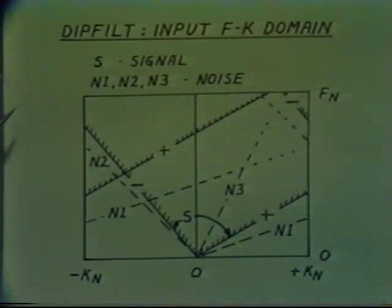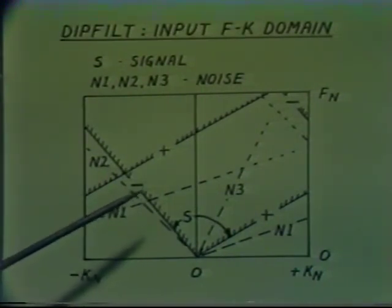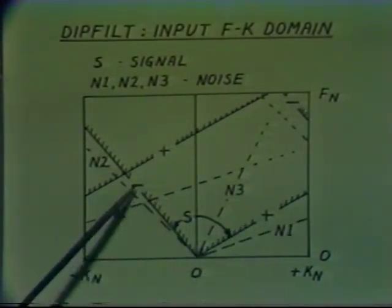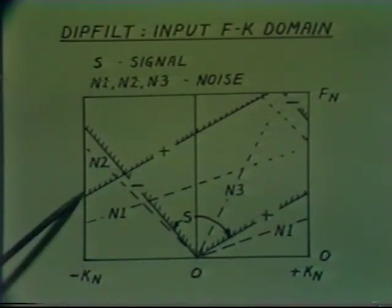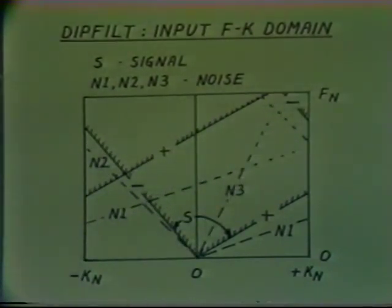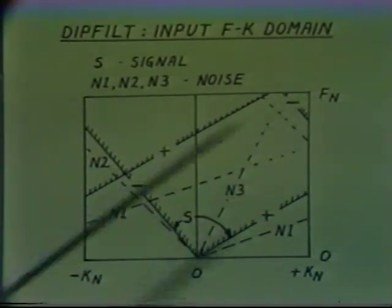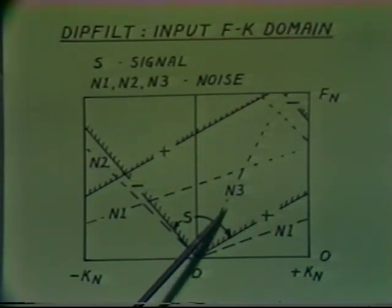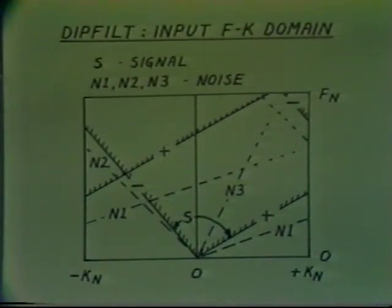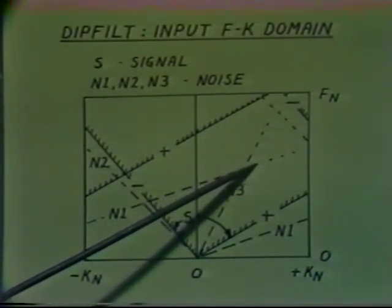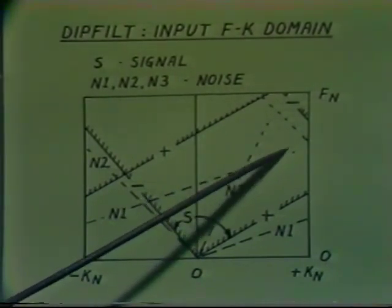Looking at how that stacked section appears in the FK domain: the primary signal falls in a wedge-shaped zone bounded by the positive and negative DIPs. In general, some of the signal energy will alias back across the FK plane — there's quite a lot of aliased energy on the positive DIP side and a little on the negative DIP side. The noise modes N1 and N2 also alias back across the FK plane. The N3 noise mode, which falls within the range of signal DIPs, doesn't alias — it's too flat a DIP. The noise modes in general become lower amplitude at higher frequencies.